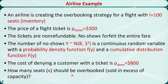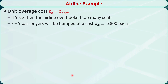We can convert this problem to a news vendor problem because it involves the overage cost and the underage cost. The news vendor problem has been introduced in a previous video.